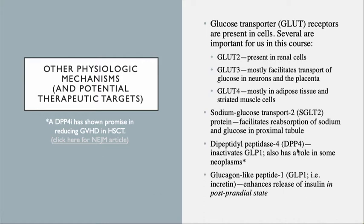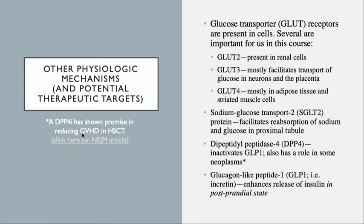DPP-4 proteins are ones that inactivate GLP-1, or glucagon-like peptide 1 — the incretins. DPP-4 also has a role in some neoplasms, and a recent New England Journal of Medicine article described its role in lessening the chance of graft-versus-host disease in stem cell transplants. It's a relatively new finding; I don't think it's FDA-indicated yet, but studies are expected to follow.